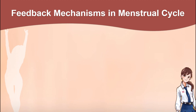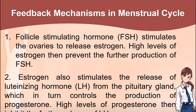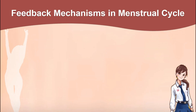The feedback mechanisms in the menstrual cycle: 1. Follicle-stimulating hormone (FSH) stimulates the ovaries to release estrogen. High levels of estrogen then prevent further production of FSH. 2. Estrogen also stimulates the release of luteinizing hormone (LH) from the pituitary gland, which in turn controls the production of progesterone. High levels of progesterone then inhibit further release of LH. To understand the feedback mechanism more, let's study this diagram.